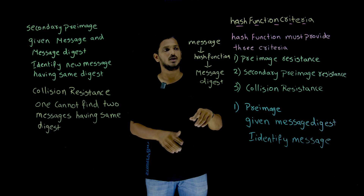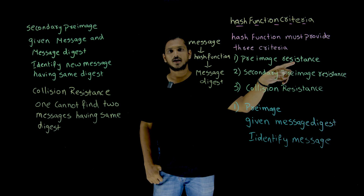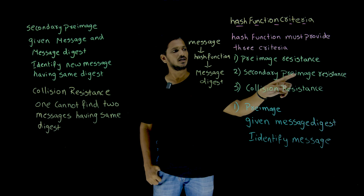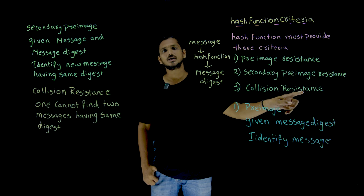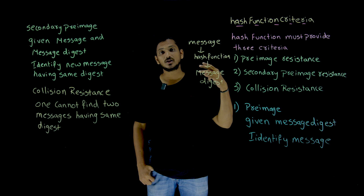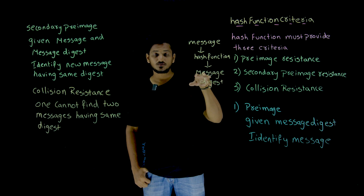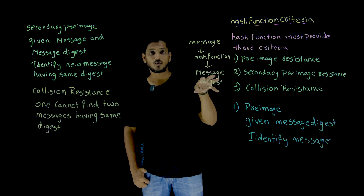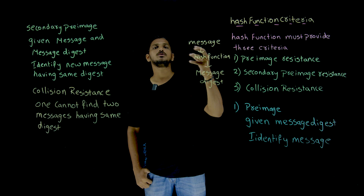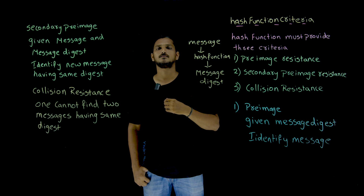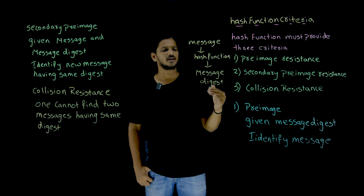There are three types of attacks we are going to have: the pre-image attack, the secondary pre-image attack, and the collision attack. Our hash function has to provide resistance to all three of these attacks.